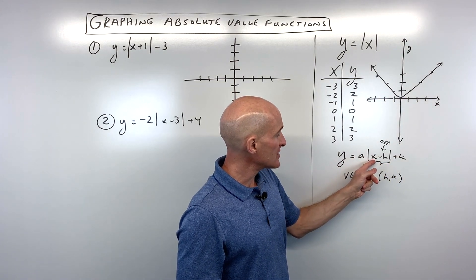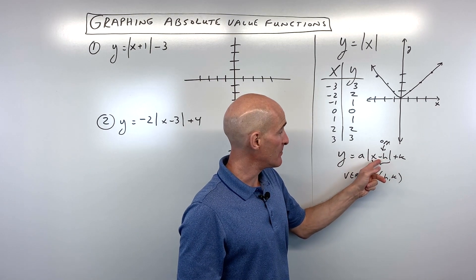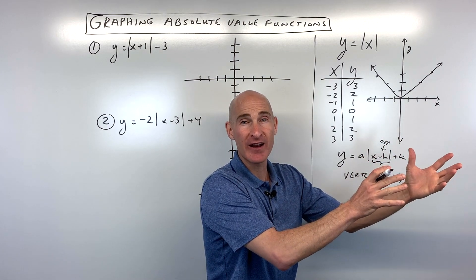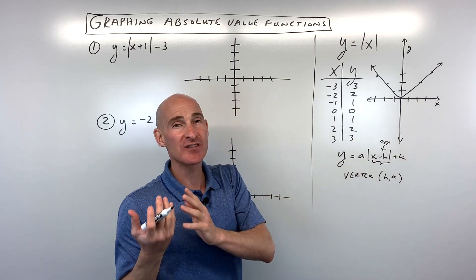Say, for example, this was an absolute value of x plus three. See, plus three you would think would be right three, right? But it's actually the opposite. It goes to the left three.